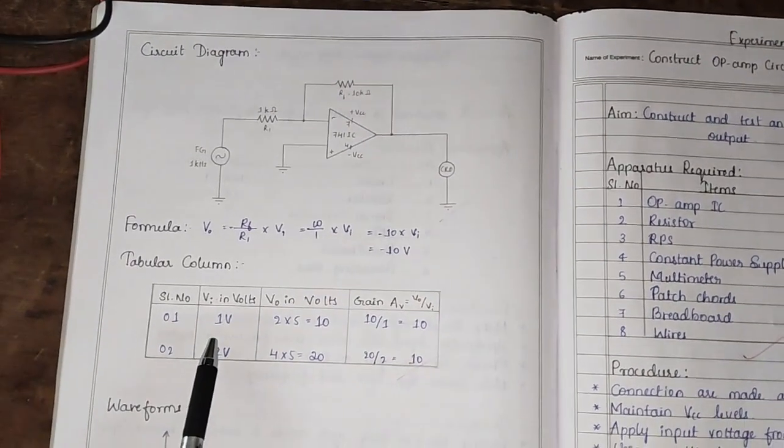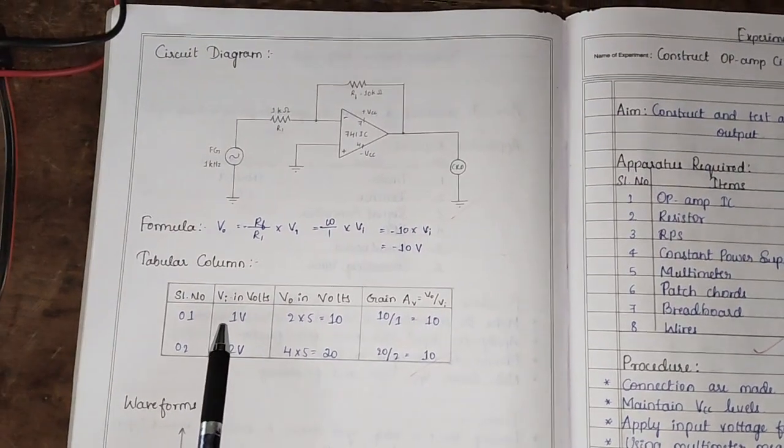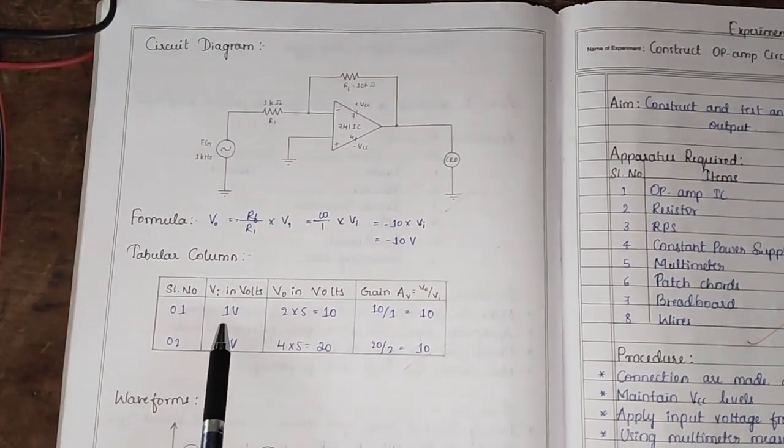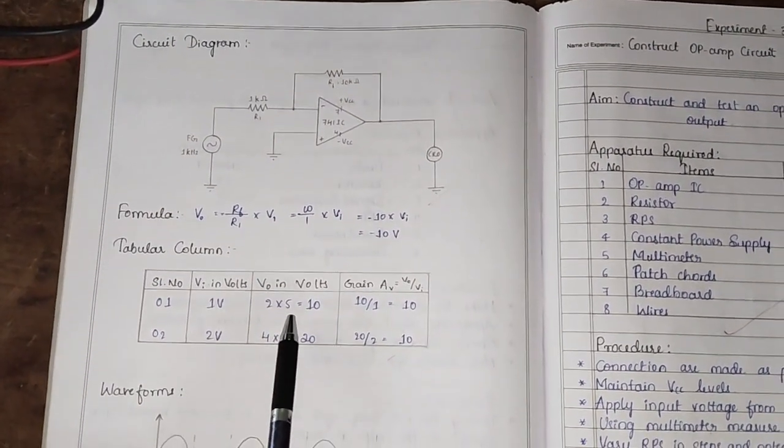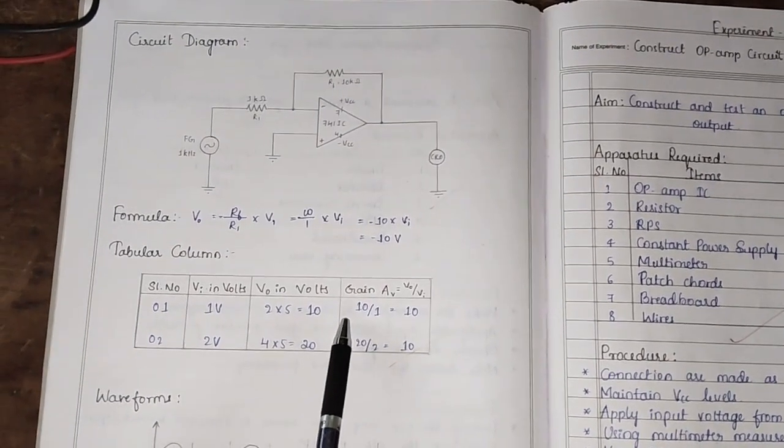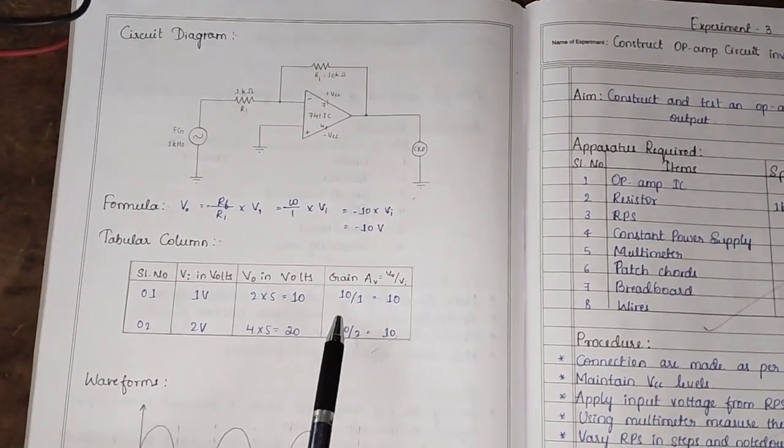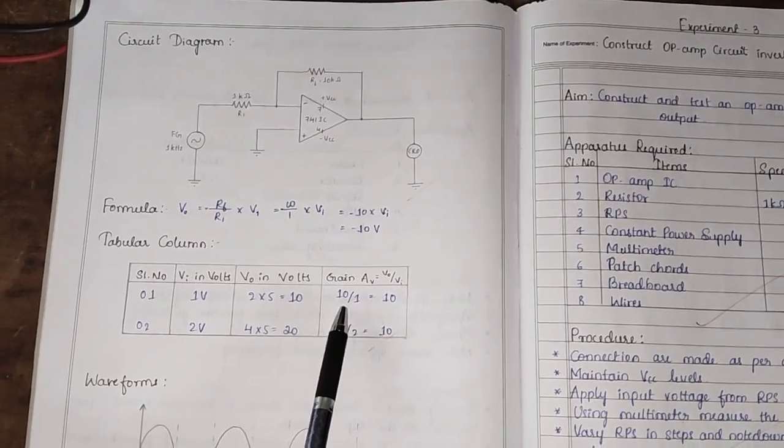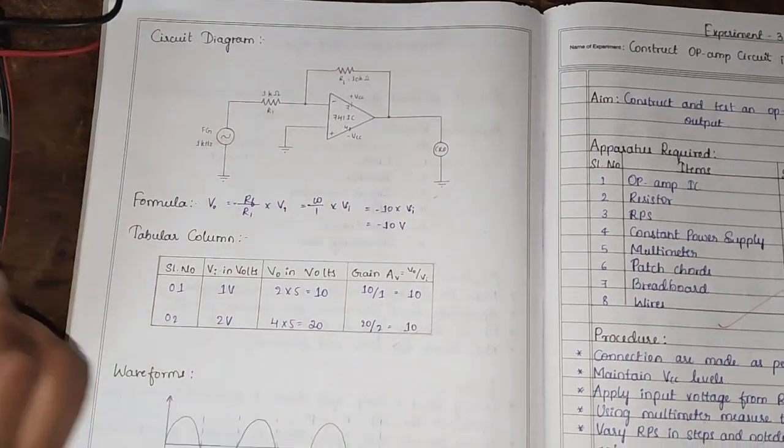That means here we can observe that whenever we give input as 1 volt, then we obtain the output voltage as 10 volt with its 180 degree phase shift. Now let's see how this experiment can be conducted on the breadboard.